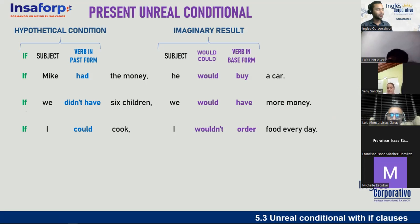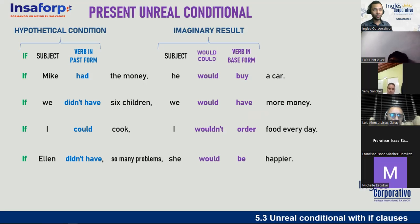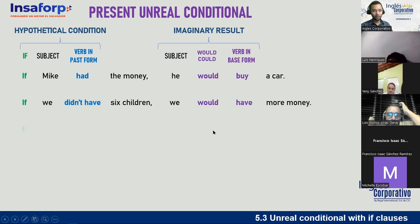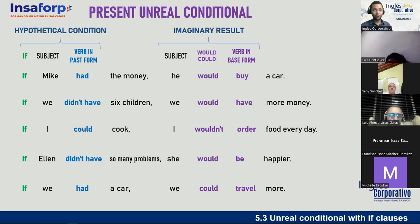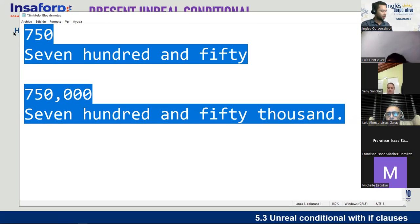'If Ellen didn't have so many problems, she would be happier.' Si Ellen no tuviera tantos problemas, sería más feliz. And: 'If we had a car, we could travel more.' Si tuviéramos auto, podríamos viajar más. Notice that the last example uses 'could' — why? Because 'can' is a modal auxiliary, and 'would' is also a modal auxiliary. You cannot use two modal auxiliaries together — that is grammatically incorrect.